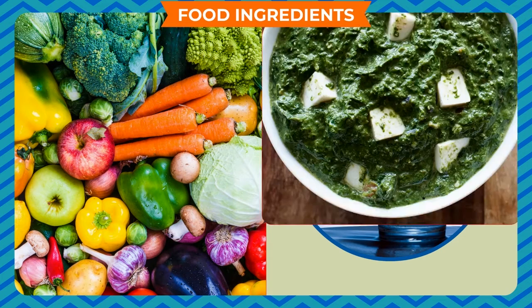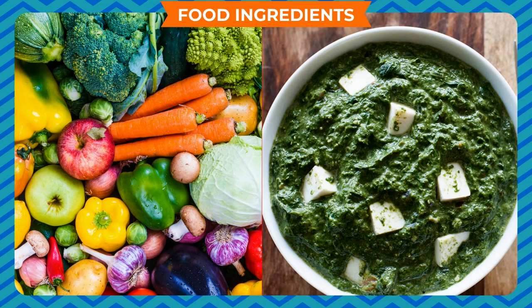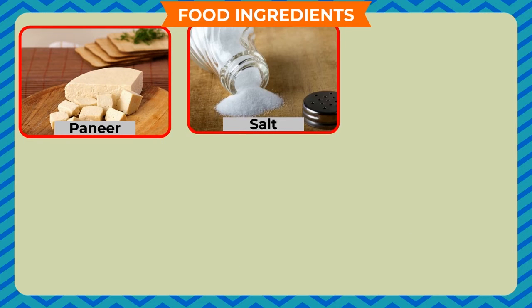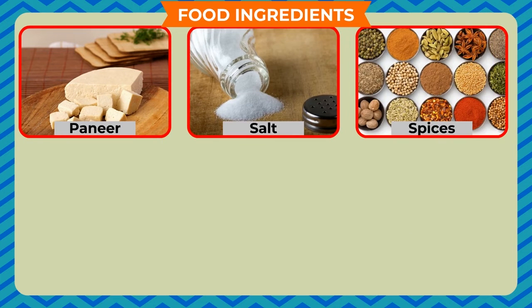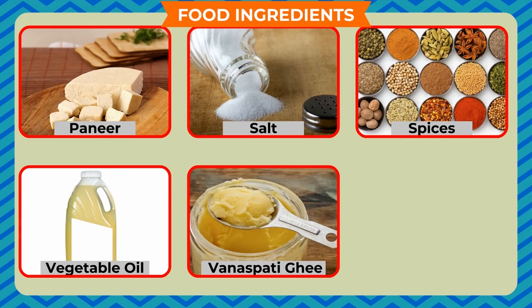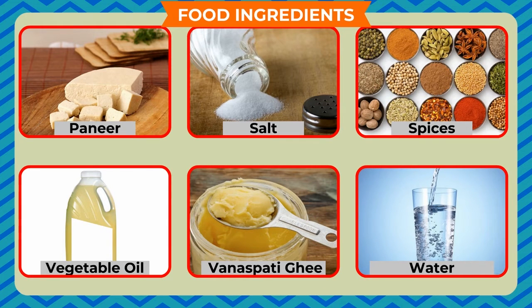There are other dishes that require many ingredients for their preparation. For example, mixed vegetable or palak paneer. To make these dishes we use different kinds of vegetables, paneer, salt, spices, vegetable oil or vanaspati ghee, and water.